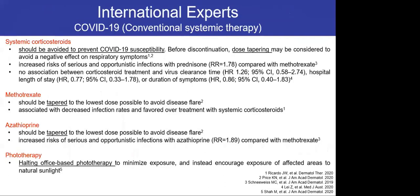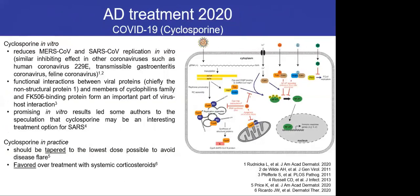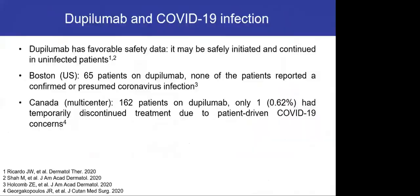International experts say systemic corticosteroids should be avoided to reduce COVID infection susceptibility. Methotrexate and azathioprine should be tapered to the lowest dose possible to avoid disease flare. Regarding cyclosporine, interestingly, cyclosporine in vitro has been shown to reduce the replication of other coronaviruses like MERS and SARS. In practice, it is prudent to taper to the lowest possible dose to avoid disease flare, and cyclosporine may be favored over systemic corticosteroids.